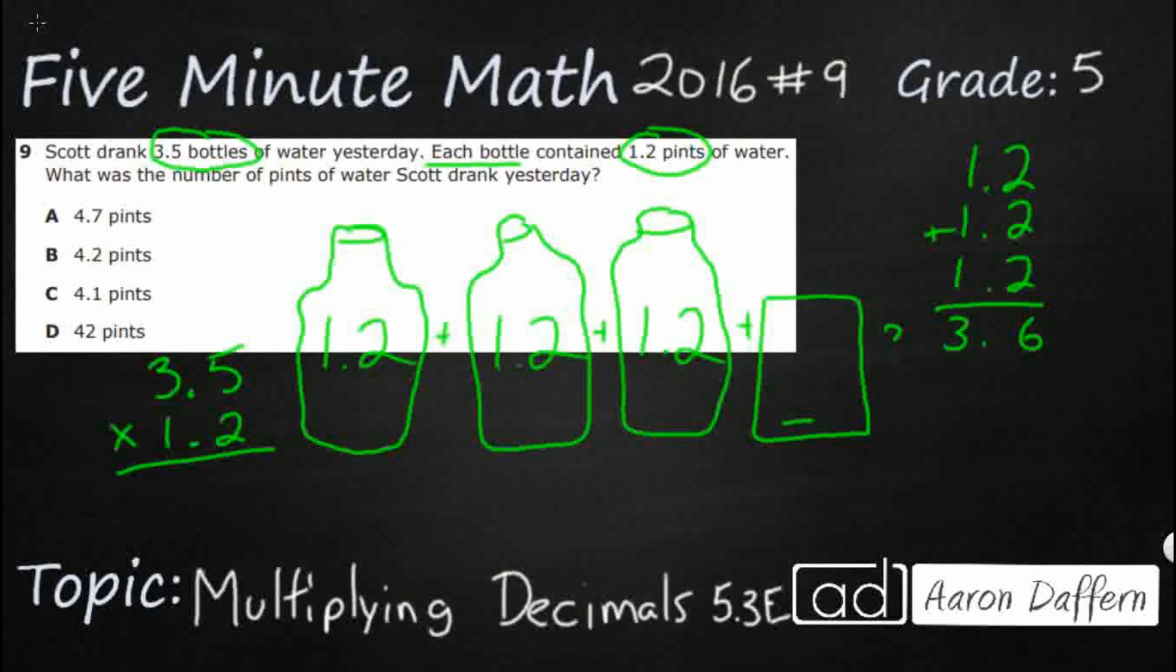So right now we're going to just ignore these two right here. And we're going to pretend it's 35 times 12. We know how to do 35 times 12. So that's what we're going to do. Let's do 35 times 12.